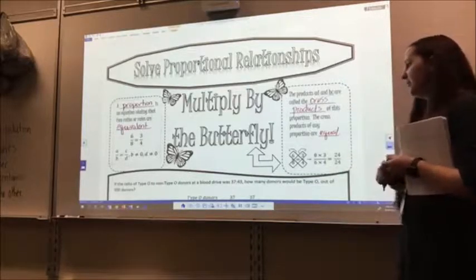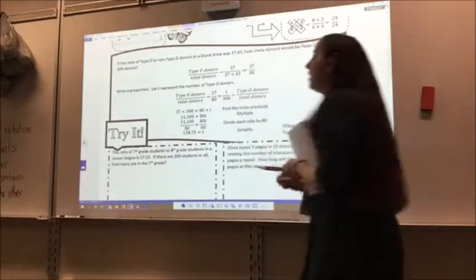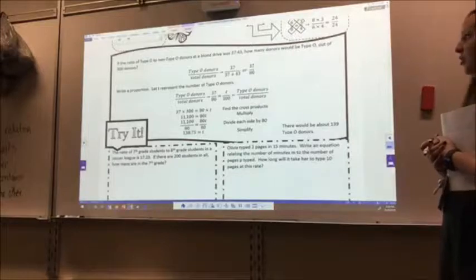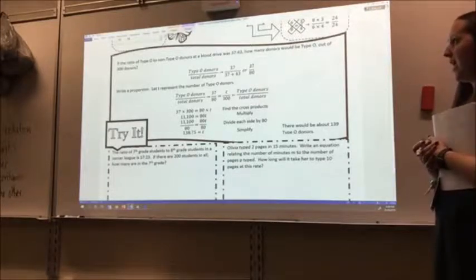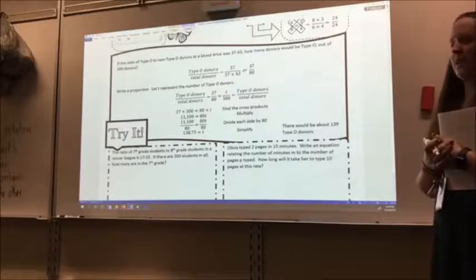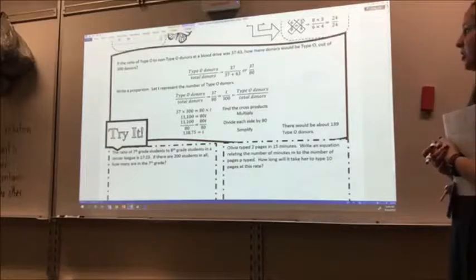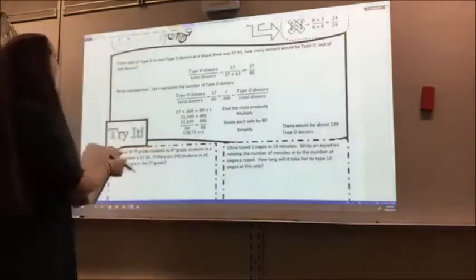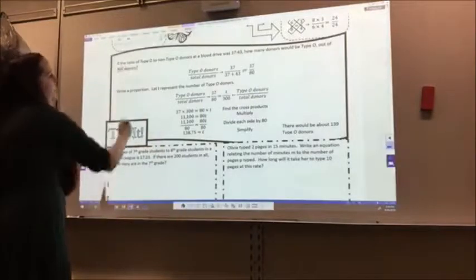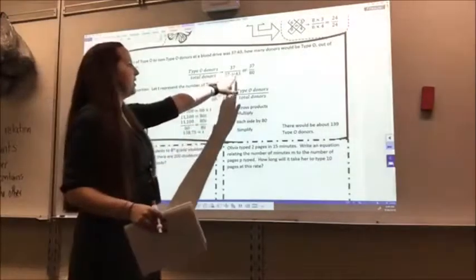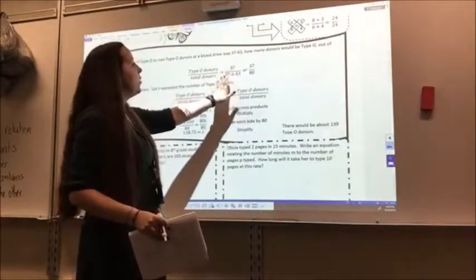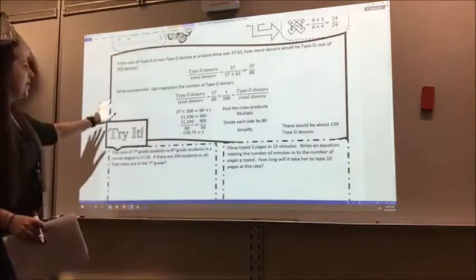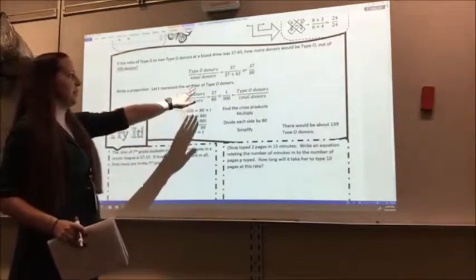All right, so I have an example here. If the ratio of type O to non-type O donors at a blood drive was 37 to 43, how many donors would be type O out of 300 donors? So the first thing that I want to do is I have my type O donors, which is 37, and it's out of 300 donors, which is my total number of donors. So I need to add 37 plus 43, because that's the ratio I was given. When I add them together I get 80, so I have 37 over 80. Now I can write a proportion. I let t represent the number of type O donors.